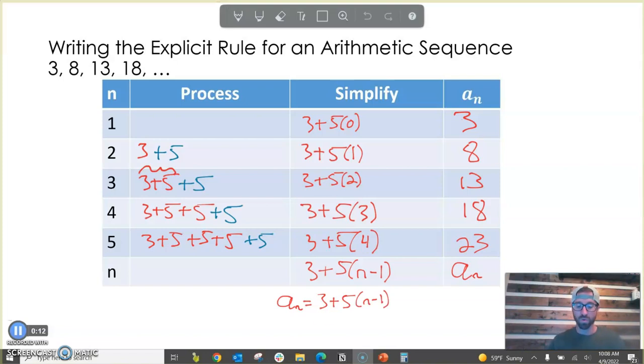Now, that's our rule for this particular sequence. When we start with 3 and we increase by 5 every time, but let's generalize. Don't we think that this pattern could hold true for other arithmetic sequences? This number right here is basically our first term. Not basically, it is our first term. And this number right here is our common difference.